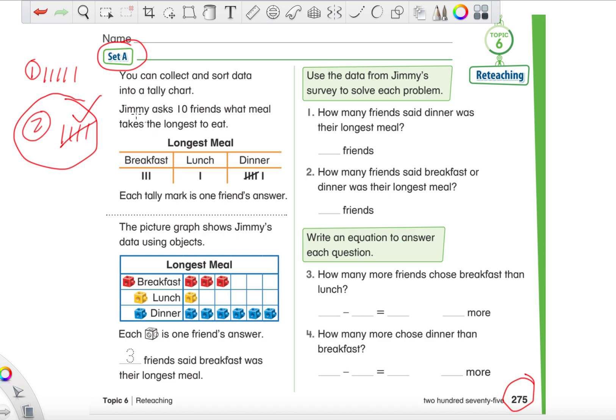Now that we've refreshed that, let's see what this is about. It says Jimmy asks 10 friends what meal takes the longest to eat. Now, one thing you can do whenever you see a tally chart, if you want to make certain questions easier on you, I would recommend before reading any question, counting each tally mark and right next to each of them, you write the number. That is something that is optional, you don't have to, but it could save you some frustration later on.